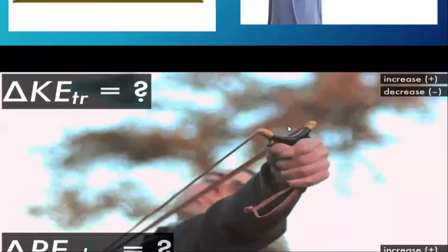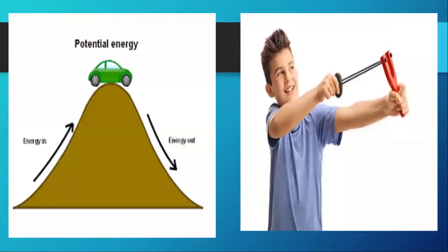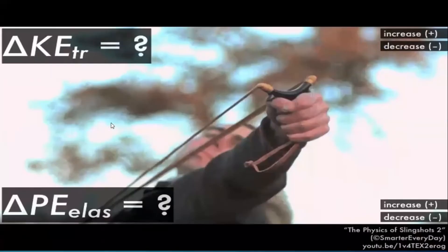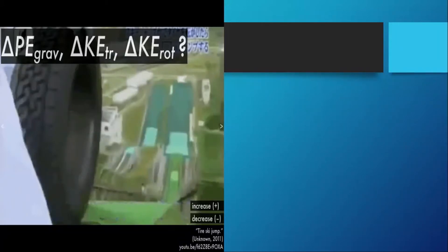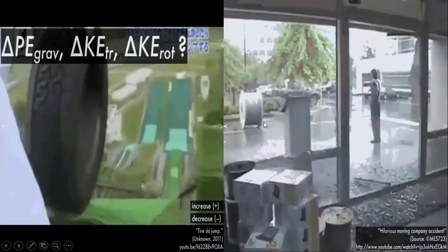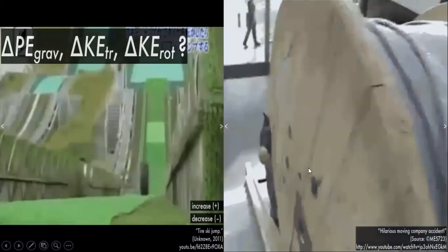Consider a drone sling: it is able to store energy as a result of its position. When in its usual equilibrium position, no energy is stored. When its position is altered from equilibrium, the sling stores energy by virtue of its position — that stored energy is called potential energy. Similarly, a car resting on top of a mountain, a tire at a certain height, and an object rolling down all have potential energy.